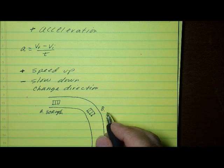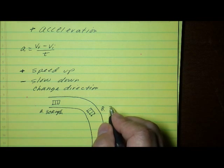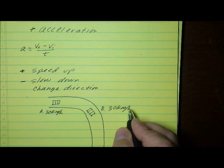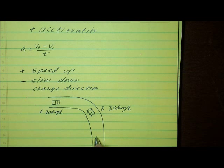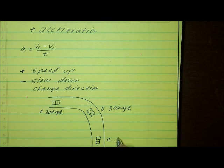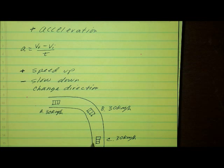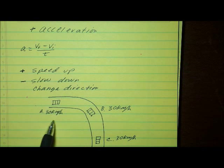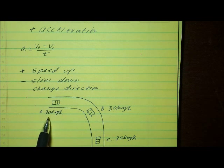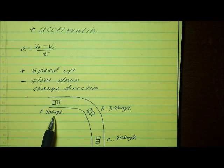When he gets halfway through the curve at point B, the speedometer again says 30 kilometers per hour. At point C, having gone all the way around the curve, the speedometer still reads 30 kilometers per hour. You might think that since the speedometer reads 30 kilometers per hour all the way around the curve, the velocity is constant and he's not accelerating — but that's not true.